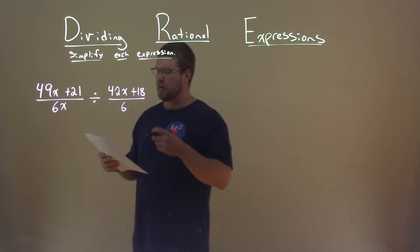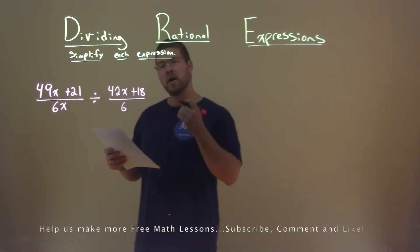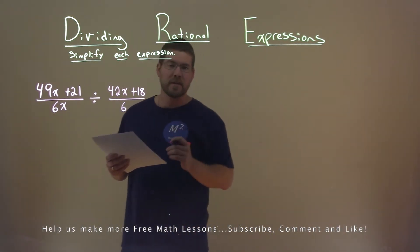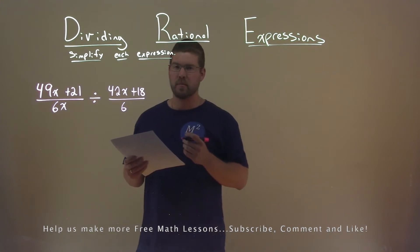We're given this problem right here, 49x plus 21 divided by 6x divided by 42x plus 18 divided by 6, and we need to simplify this expression.